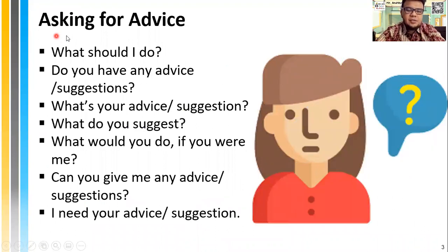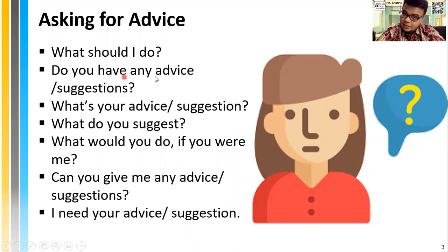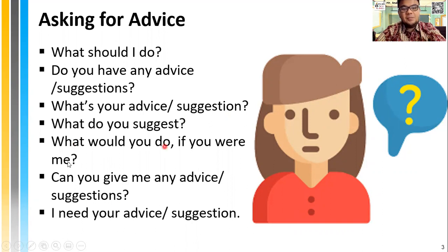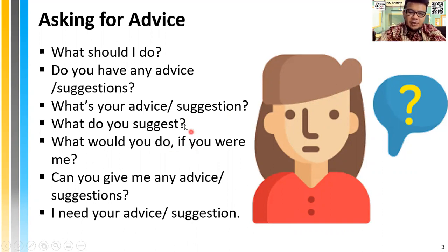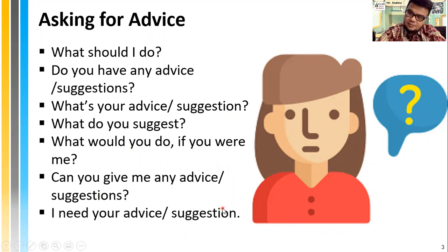What are the expressions you say when you want to ask for advice? For example: What should I do? Do you have any advice? Do you have any suggestions? What's your advice or suggestion? What do you suggest? What would you do if you were me? This last one uses the second conditional — an imaginary scenario. Can you give me any advice or suggestions? I need your advice or suggestion.